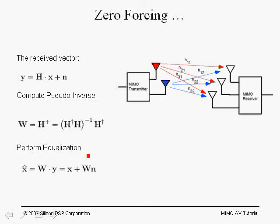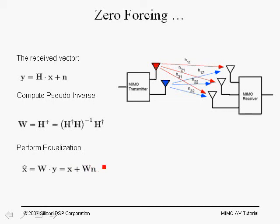To perform equalization, we take the received vector Y and pre-multiply by the pseudo-inverse W of channel matrix H, obtaining an estimate of X. Pre-multiplying Y by W: WY equals W times HX plus W times N. Looking at WH, we see that (H-Hermitian H)-inverse times H-Hermitian times H gives the identity matrix, recovering X. However, we also get the additional term W times N, so our estimate of X is corrupted by noise.